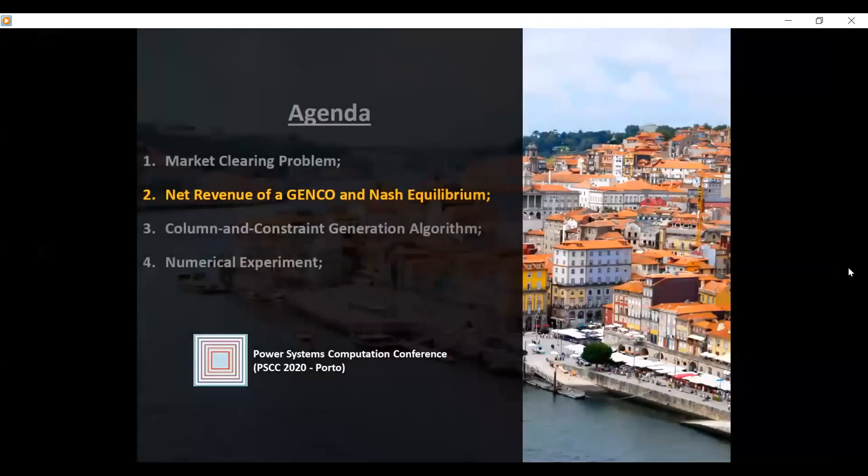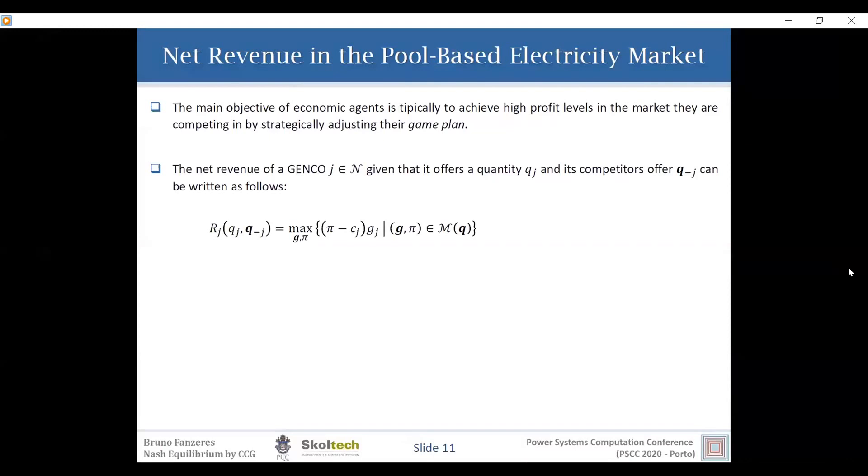So in general, what we observed in the market is that, well, most economic or all economic agents is aiming to achieve high level of profits. So to compute the profit or the net revenue in this context, we make use of this expression here, which basically resumes as the difference between the electricity price and the cost generated, the electricity times the amount dispatched. And of course, these variables must be optimal in the set of market solutions.